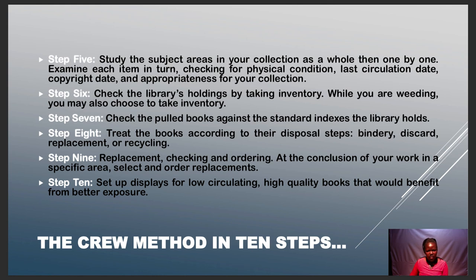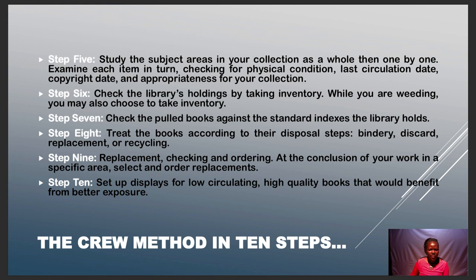Step 5: study subject areas in your collection as a whole, then examine each item — checking physical condition, last circulation date, copyright date, and appropriateness for your collection. Step 6: check the library's holdings by taking inventory while weeding. Step 7: check the pulled books against standard indexes the library holds. Step 8: treat books according to their disposal steps — those needing binding, discarding, replacement, or recycling.